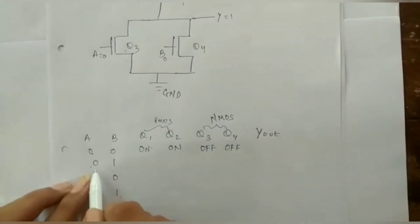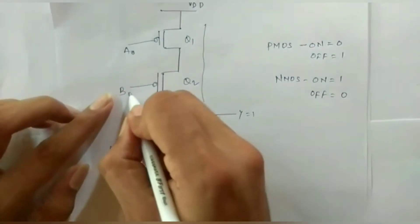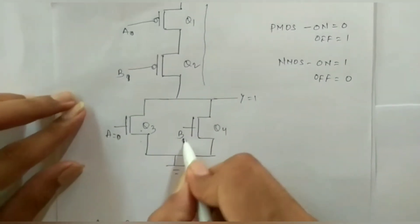Now for the second one, 0, 1. A is 0, B is 1, A is 0, B is 1.